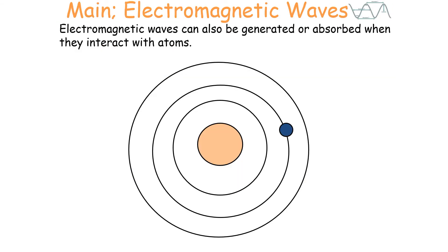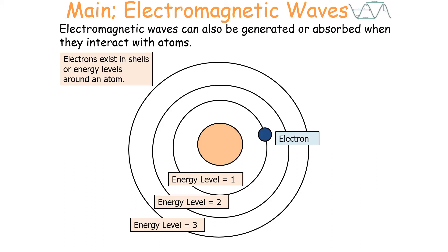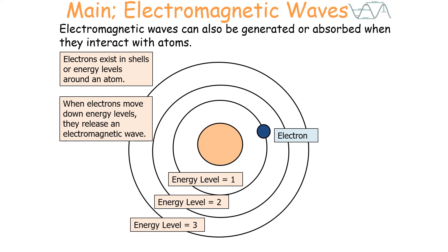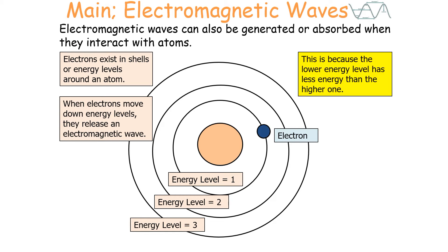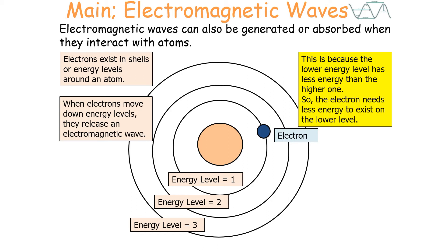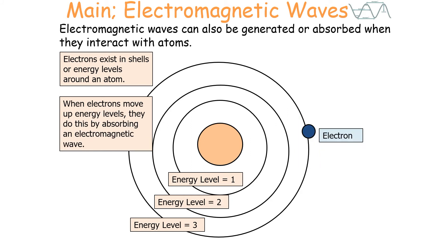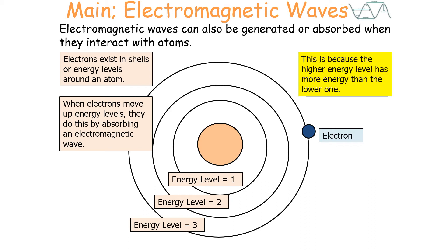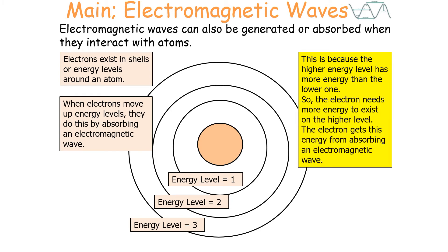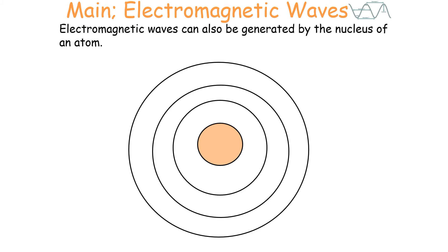Electromagnetic waves can also be generated or absorbed when they interact with atoms. Electrons exist in shells or energy levels around an atom. When electrons move down energy levels, they release an electromagnetic wave, because the lower energy level has less energy and the electron has excess energy from dropping down the levels. Conversely, when electrons move up energy levels, they absorb an electromagnetic wave, because the higher energy level requires more energy.